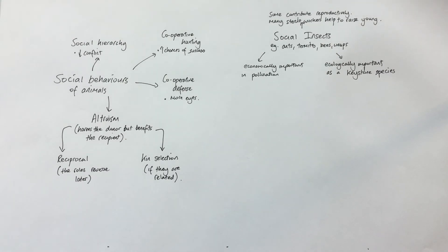Social insects are often economically important in pollination, if you think about bees, and ecologically important often as a keystone species. So a keystone species is one which is much more important than any other species in an ecosystem, and if we were to remove them it would have a more dramatic effect than if we were to remove another species.